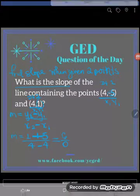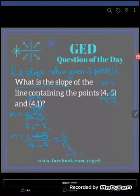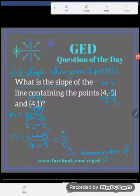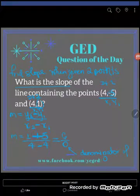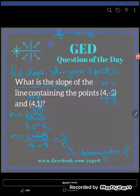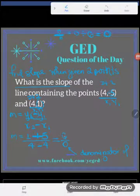Now we have a problem. We have a denominator of 0. Students think because 0 divided by 6, or 0 over 6, is always 0, that 6 over 0 will also be 0. But no, this is a very different case.